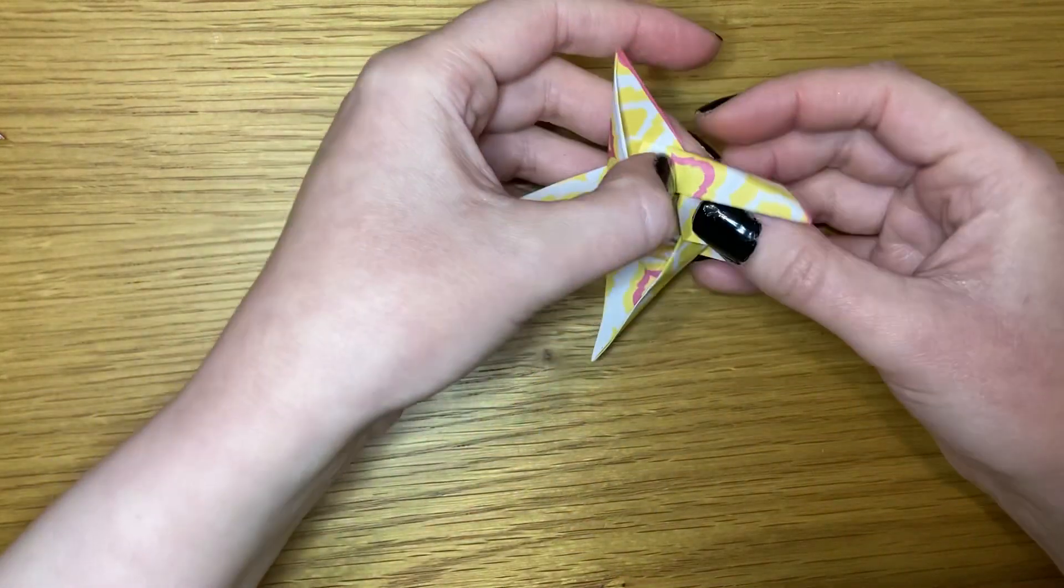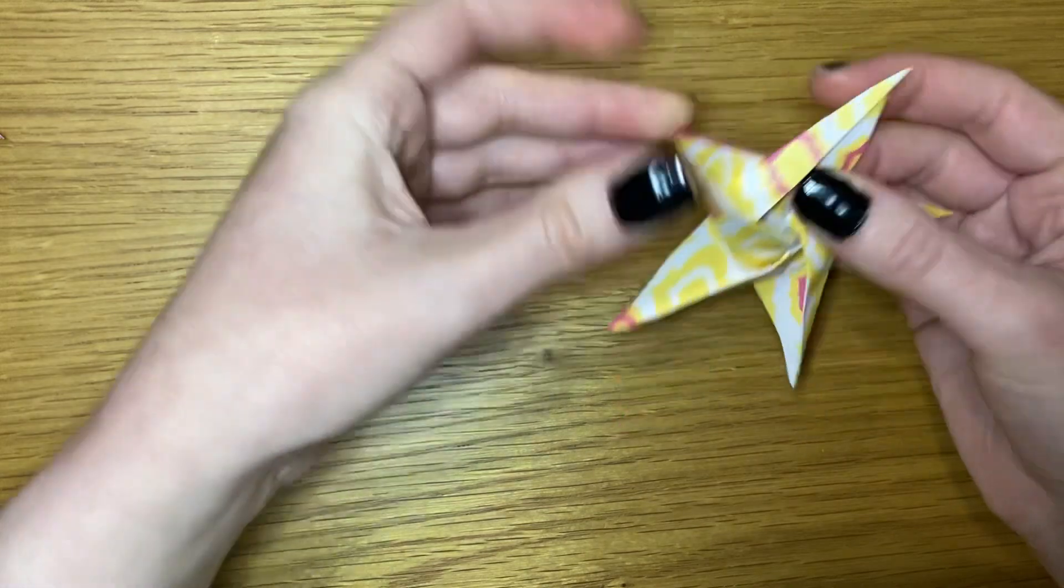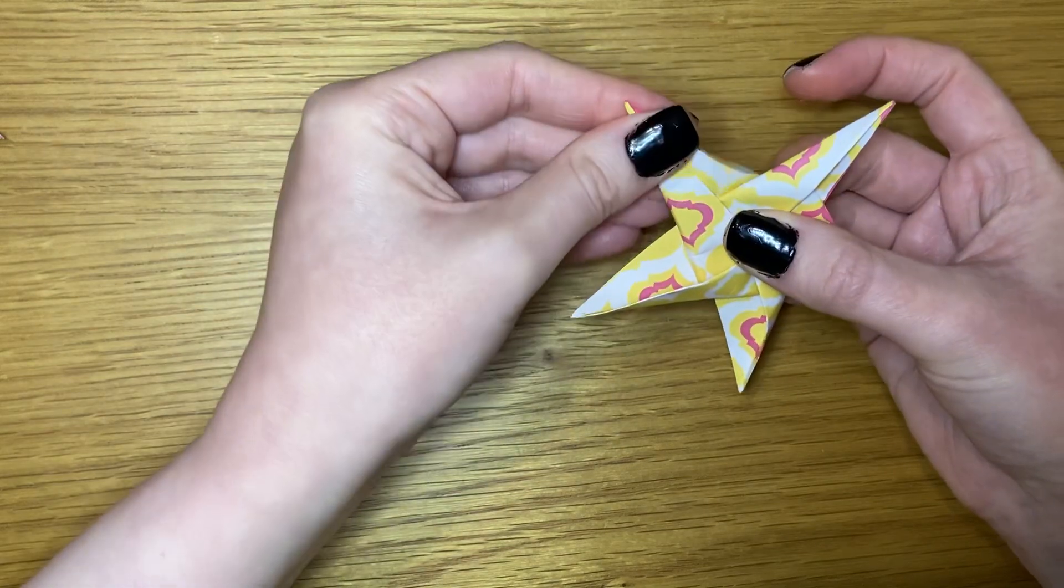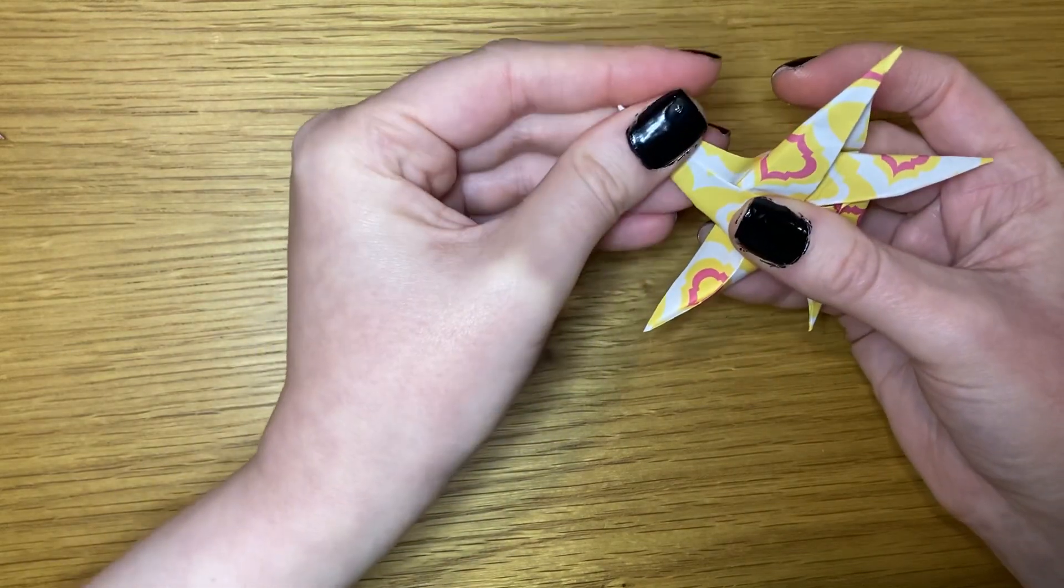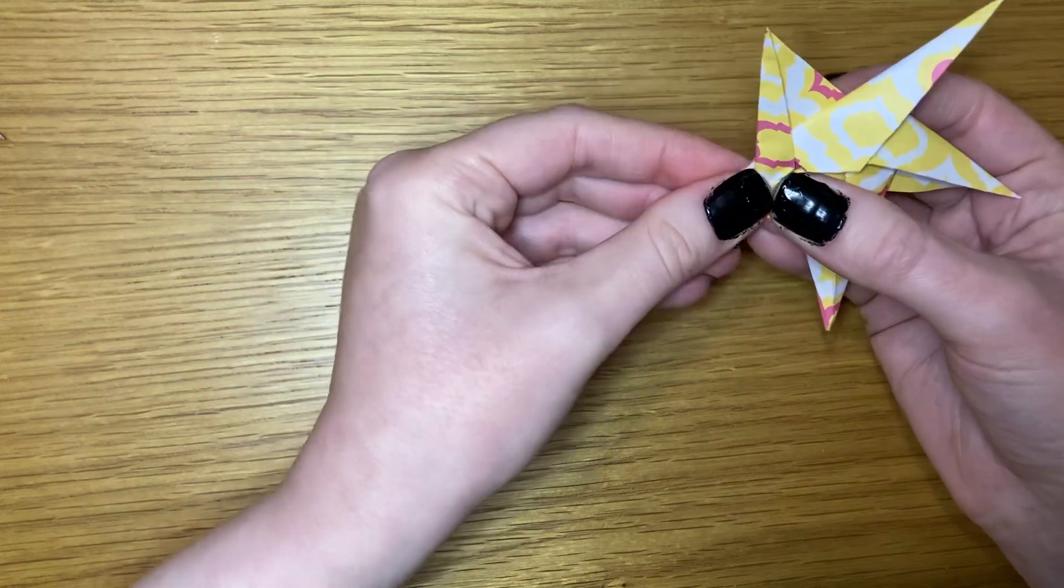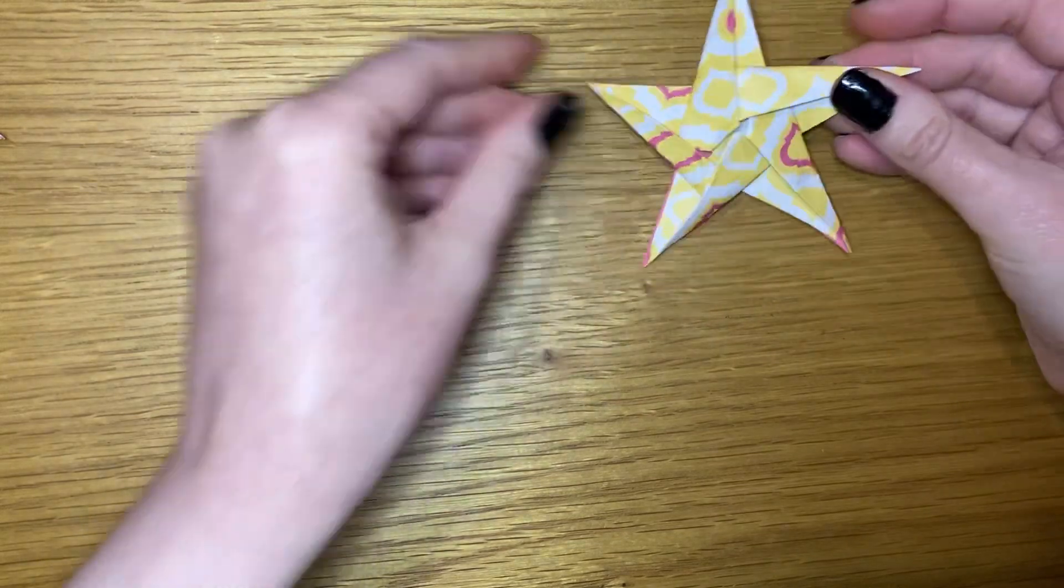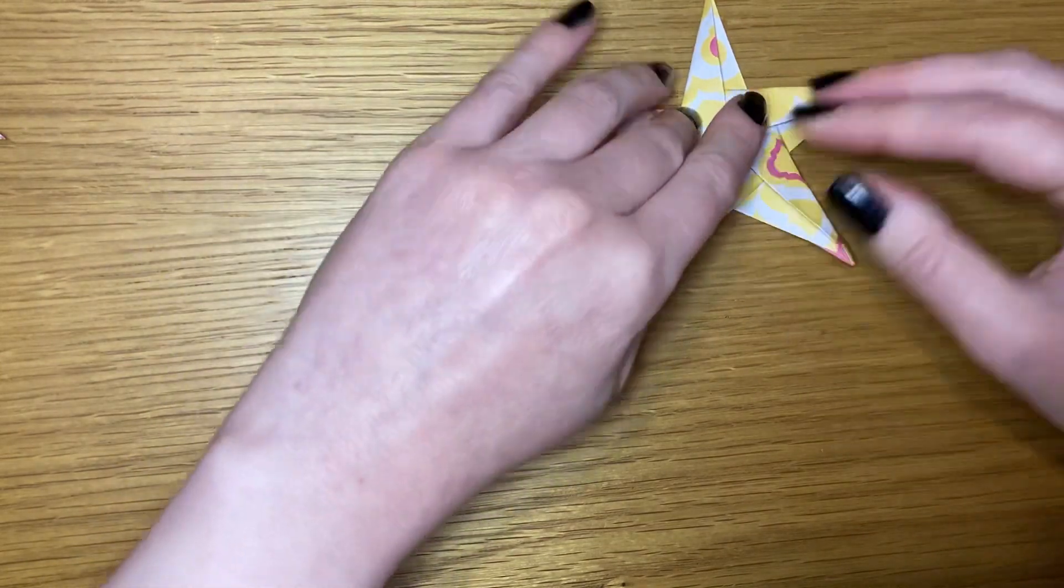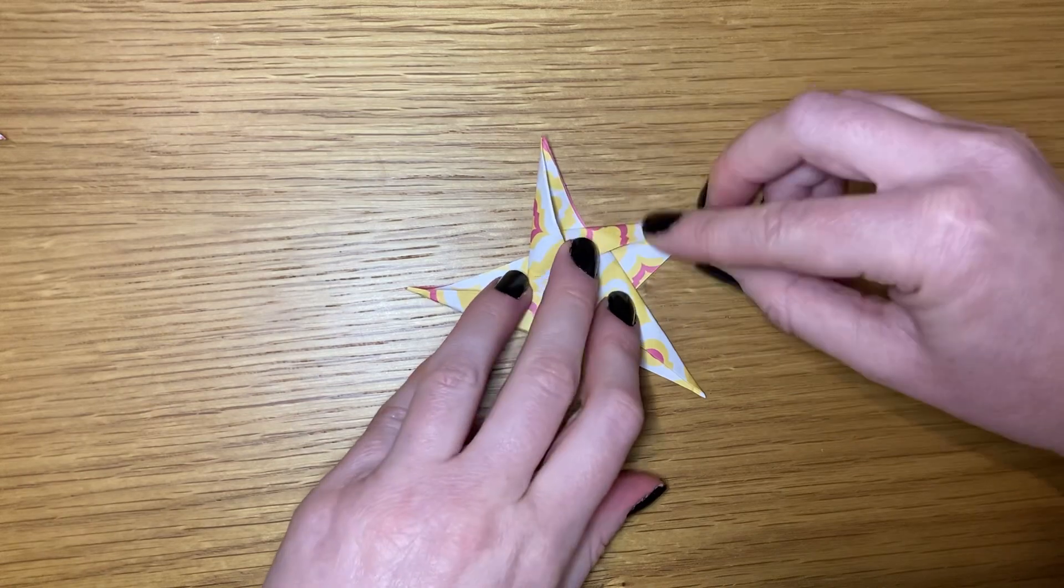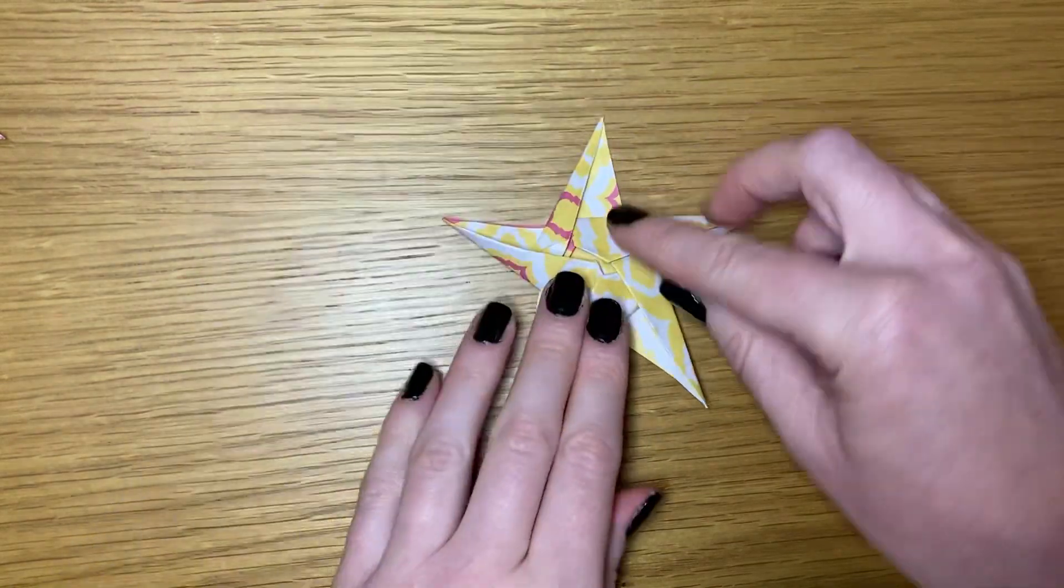As you can see they're all loose, we've got all our folds where we want them to be. Now we're just going to go around and we're going to patiently just fold them all nice and flat again. It might feel like they don't want to go into the position you want them to be in. They will, just got to be patient and just go around it very carefully, just folding it nice and flat.